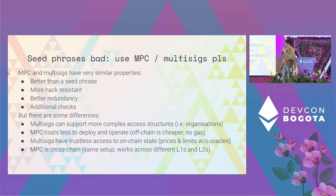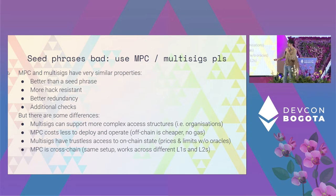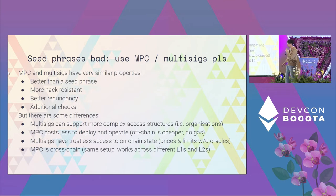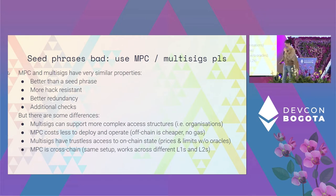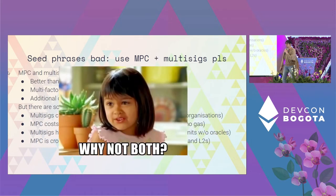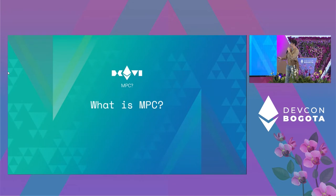There are some differences: MPC is off-chain, multi-sig is usually on-chain as a smart contract, so multi-sig can support much more complex access structures — think organizations with thousands of people voting. MPC usually costs less to deploy and operate because it's off-chain with no gas. Multi-sig also has trustless access to on-chain state, like pricing from DEXs and block-time-based limits, whereas MPC is cross-chain. MPC is probably more useful for personal setups.